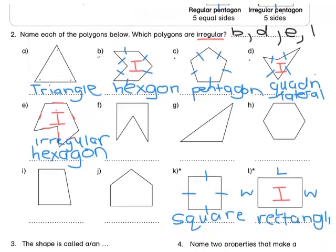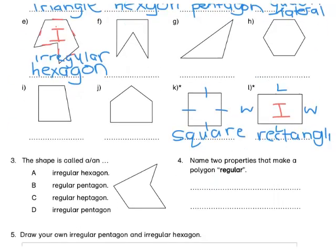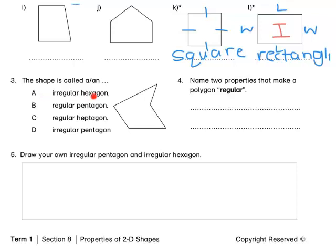Now it's your turn to complete question two by yourself in your workbook. Let's look at question three. This shape — we have options A, B, C and D. Before we look at them, let's look at the shape. We can see that all the sides are not equal in length, and the corners are also not the same size. So we can immediately say this is an irregular polygon. Let's count the sides: 1, 2, 3, 4, 5. Five means 'pent,' therefore it is an irregular pentagon. So it is D.